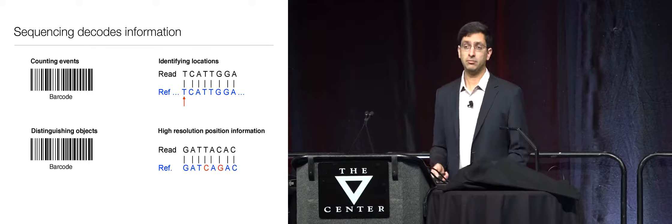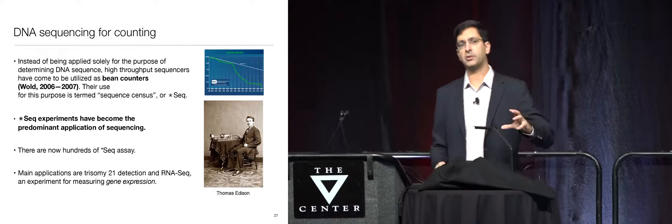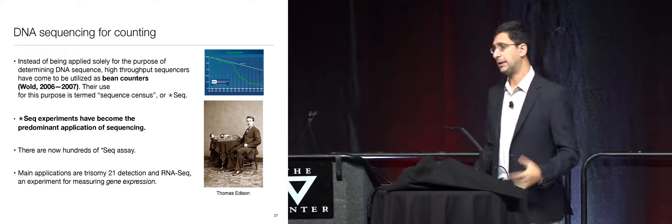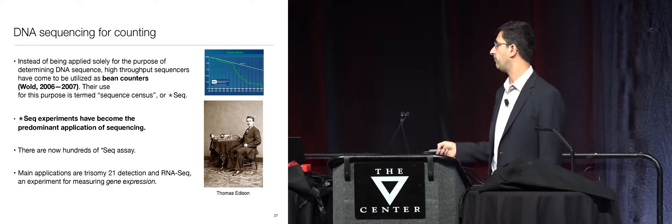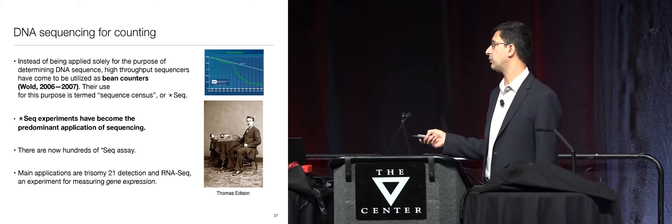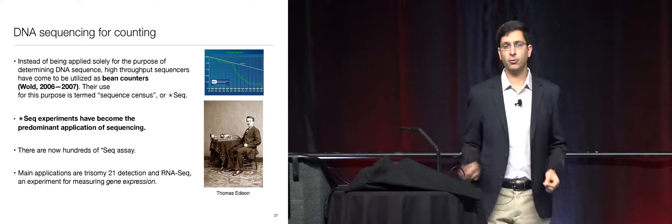The readouts are the DNA sequence, and by looking at the sequences you can figure out something about the measurement — which might be the distribution of RNA molecules in a cell. It's a very interesting development because this was not the intent when people were developing DNA sequencing over the last 20 or 30 years. But this type of process has become the dominant mode by which DNA sequencing is used today. For example, if you're pregnant, you will nowadays do a DNA sequencing test to measure the presence of trisomy 21 — not reading out letters, but measuring the abundance of certain molecules.